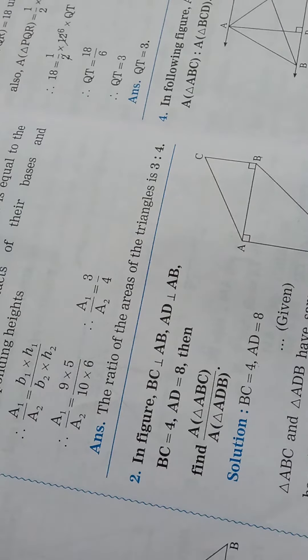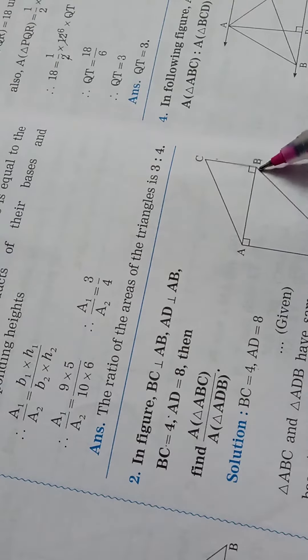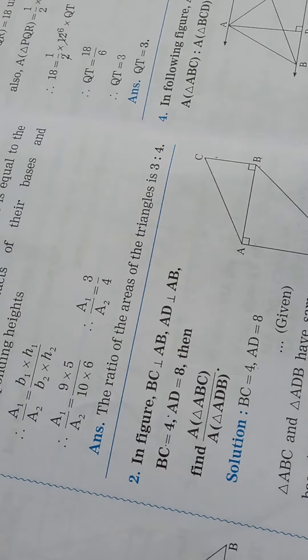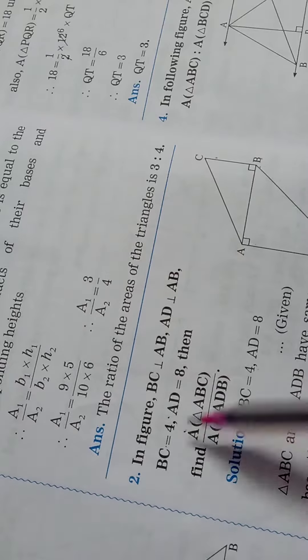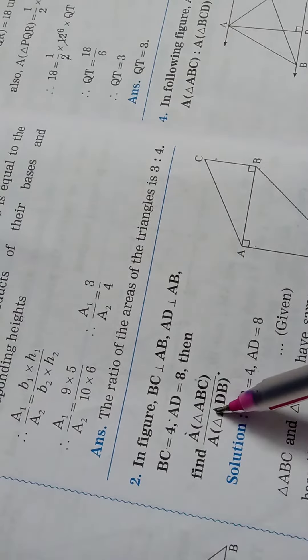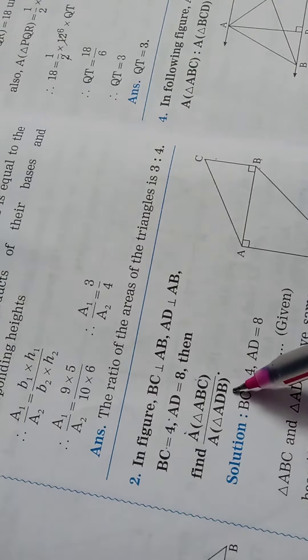Second sum of exercise 1.1 of similarity: In the figure, BC is perpendicular to AB and AD is perpendicular to AB. The value of BC is equal to 4 and AD is equal to 8. Find the area of triangle ABC upon area of triangle ADB.